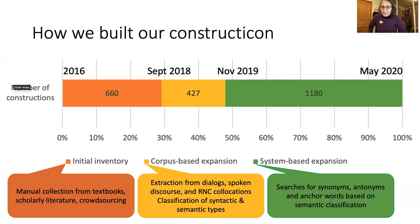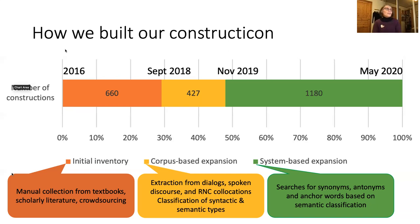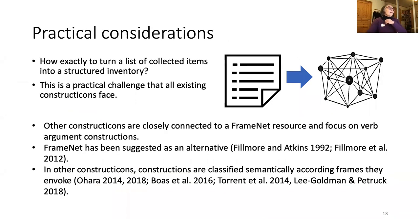Once we reached a thousand constructions, things began to gel. We began to see little knots of constructions — little groups, little meanings. We moved into a phase we call system-based expansion, where we looked at the structures and meanings of small groups of constructions and asked: can we find more constructions similar to these? This turbocharged the process — in under a year we more than doubled the size of the Constructicon, getting up to over 2,200. We were really concerned that we didn't want it to just be a list or dictionary of constructions — we wanted to capture the real complexity and the way constructions are connected to each other.